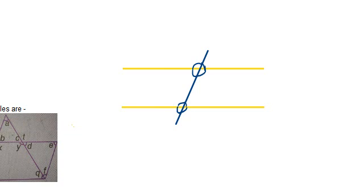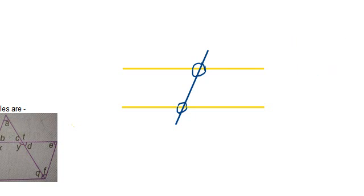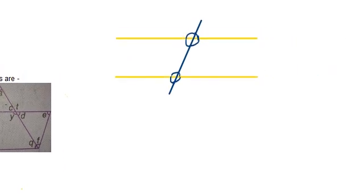The first type is a linear pair — two angles lying on the same line whose sum is 180 degrees. The second type is vertically opposite angles — the two angles opposite to each other formed by intersecting lines. For example, the angle marked in blue and the one opposite to it are vertically opposite, meaning they are equal.